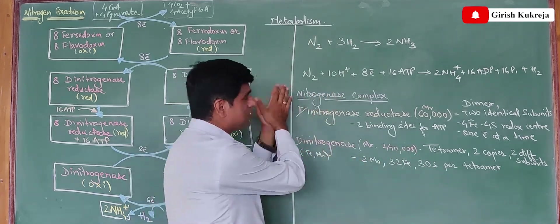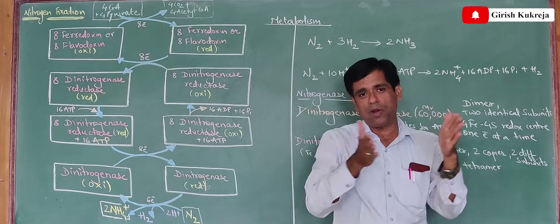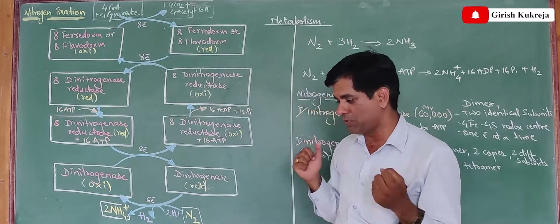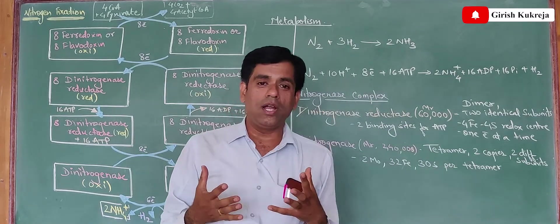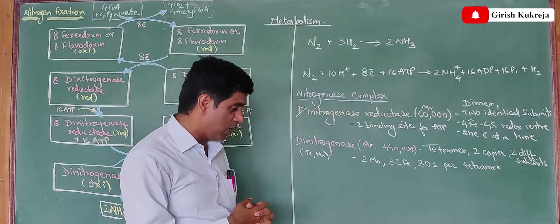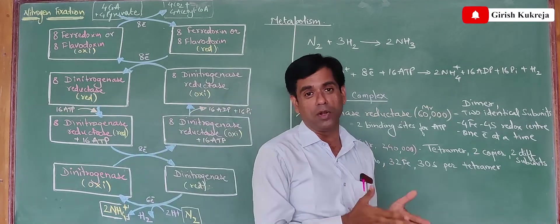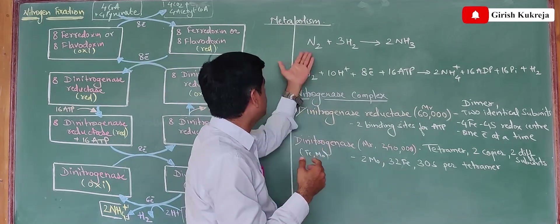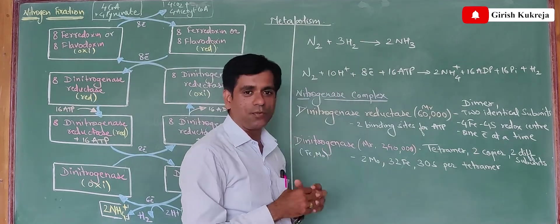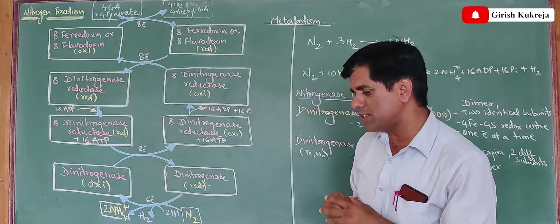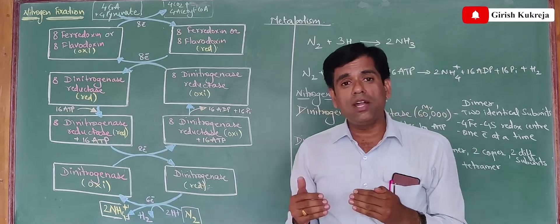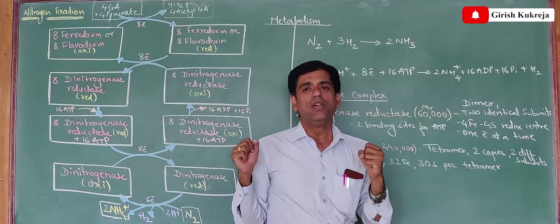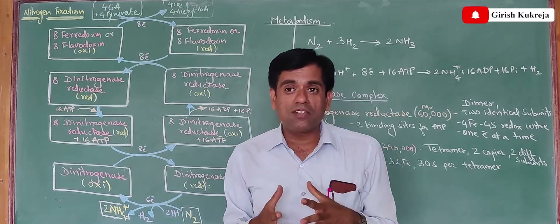Though this reaction is exergonic, the N triple bond N is one of the most stable molecules present in the biosphere. The energy required to break this N≡N would be around 930 kJ per mole — a large amount of energy. Therefore this molecule remains stable, because the activation energy required to break N≡N would be very high. This problem you must have seen when we are preparing ammonia artificially in industry.